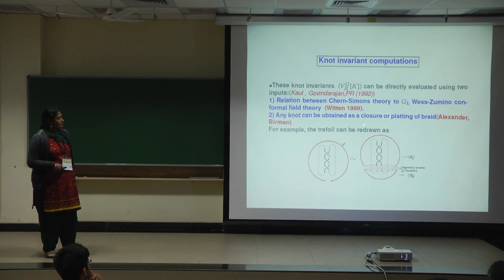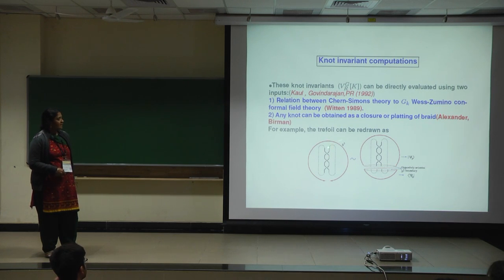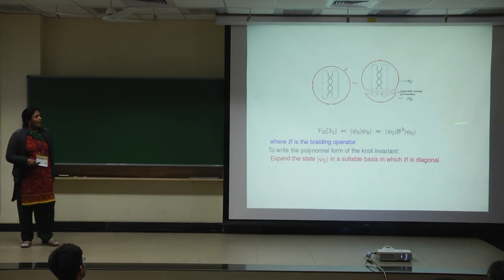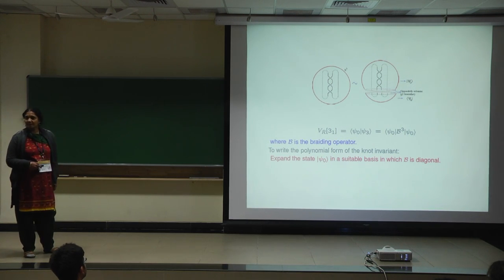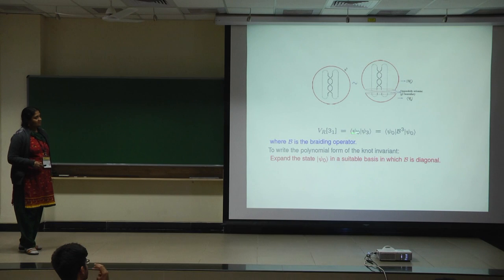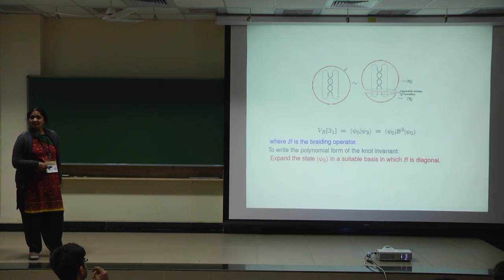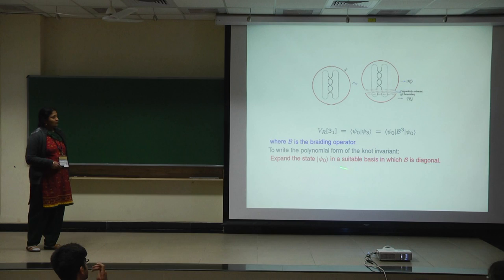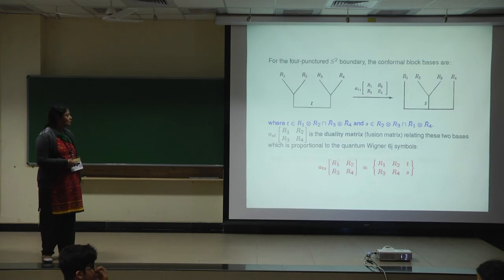The same trefoil shown earlier can be redrawn as a braid — it has three crossings in the braid, and then you do the closure. Sometimes this is called a plait diagram. Any knot can be obtained by closure or plaiting of braids. We essentially reduce to two dimensions in this evaluation: on a four-punctured boundary, when you exchange the primary fields between the middle two punctures you have a braiding operator acting three times, and the state gives the knot invariant. To find this explicitly, you expand in the four-point conformal block of the WZNW CFT.